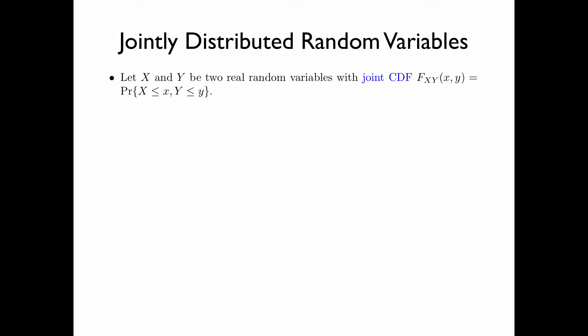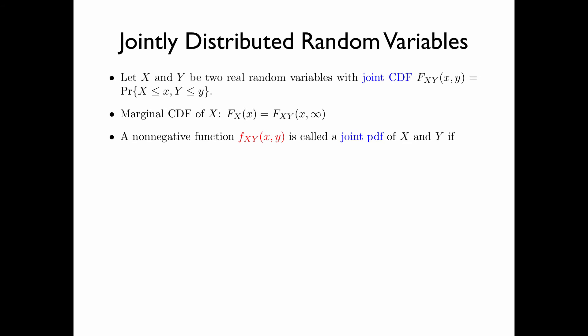Let x and y be two real random variables with joint CDF F_{xy}, defined as the probability that x is less than or equal to x and y is less than or equal to y. The marginal CDF of x, F_x(x), is defined as the joint CDF F_{xy} evaluated at x and infinity. A non-negative function f_{xy} is called a joint PDF of the random variables x and y if by integrating f_{xy}(u, v) where v goes from minus infinity to y and u from minus infinity to x, we obtain the joint CDF.